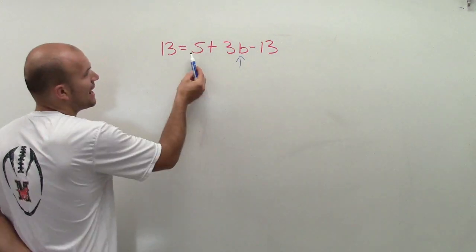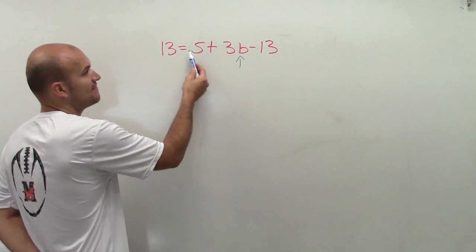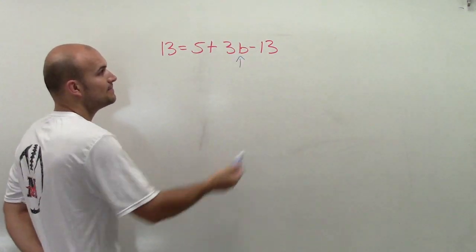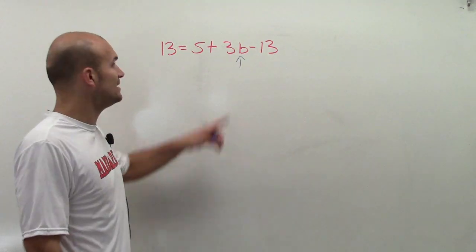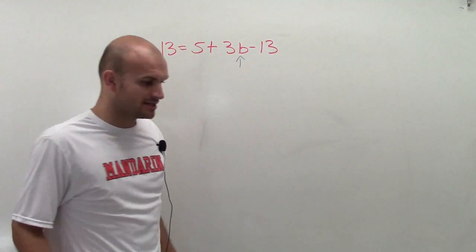Well, here, what we notice is I have a positive 5. So that means a 5 is being added to my 3b. And I have a negative 13, meaning my 13 is being subtracted from my b.